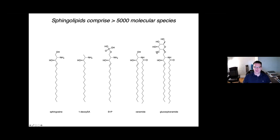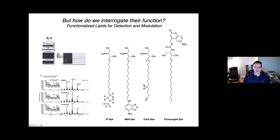There are various different head groups that can be installed on the primary alcohol — for example, a phosphate giving rise to a very potent signaling lipid, or various carbohydrates to give rise to glycolipids. There can also be different numbers of lipid tails, and most commonly the amine can be acylated.